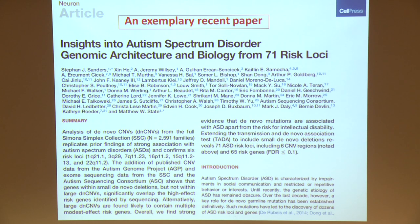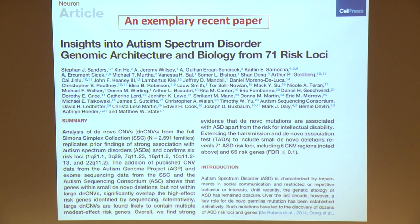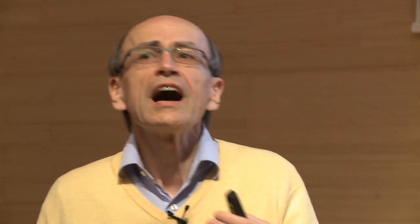One recent paper describes 71 risk loci for autism. Different papers give different numbers of loci. Because in that field there are always large author lists and the same people, one always wonders who reviews these papers — but anyway, that's a different problem. The point is that we now have a large number of genes associated with these disorders.